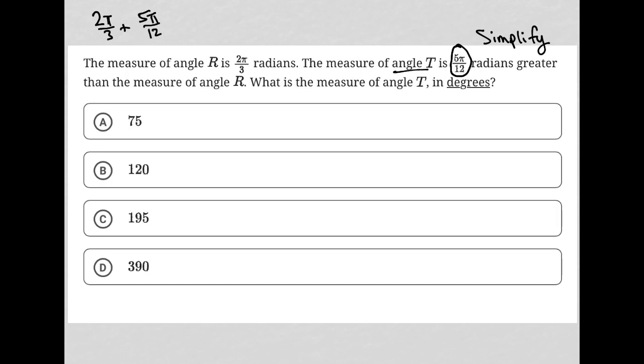In order to add these fractions, I have to have a common denominator. So I'm going to multiply this fraction by 4/4, which would give me—therefore, that first fraction would turn into 8π/12 plus that original 5π/12 that the question provided.